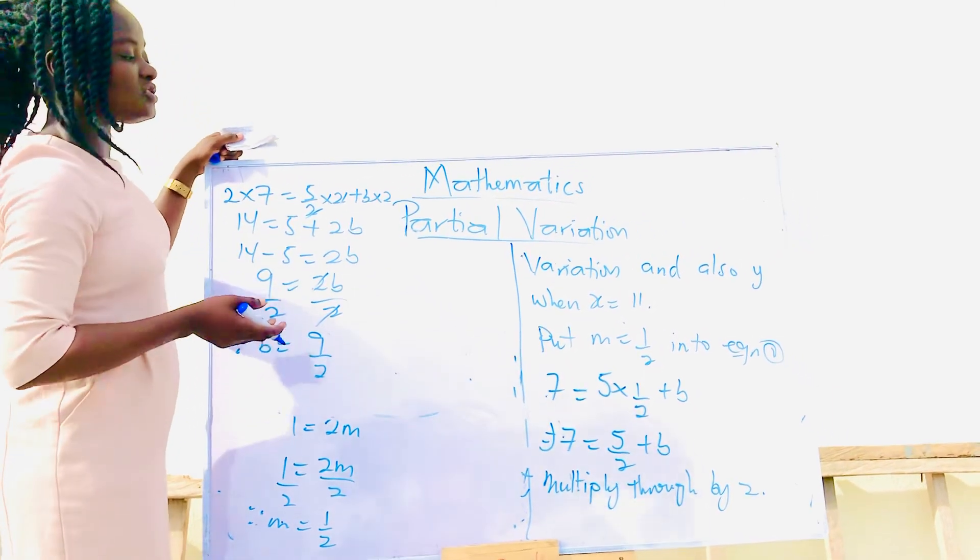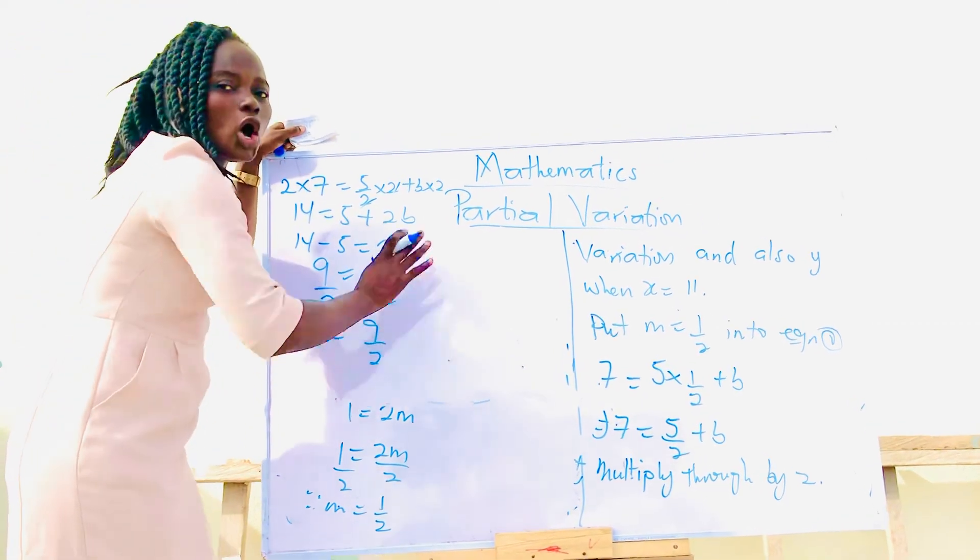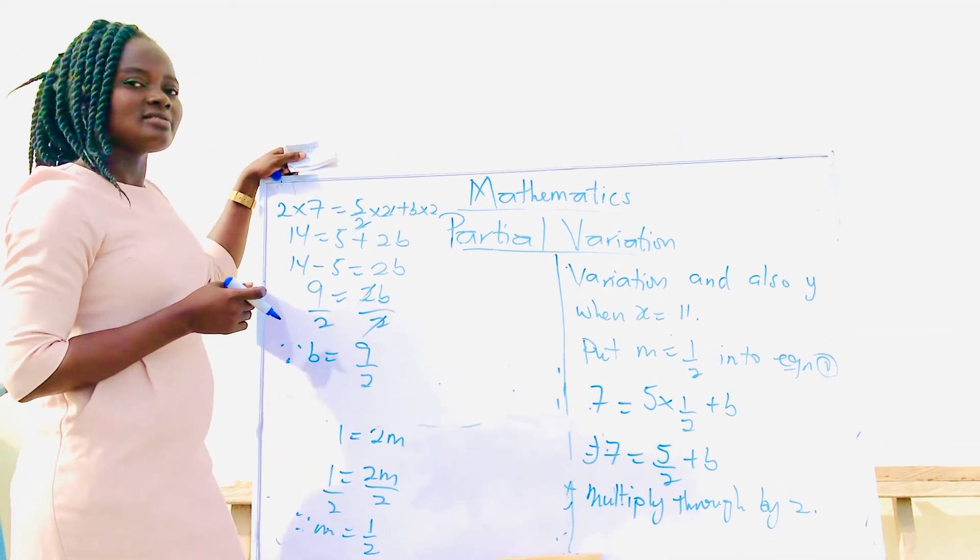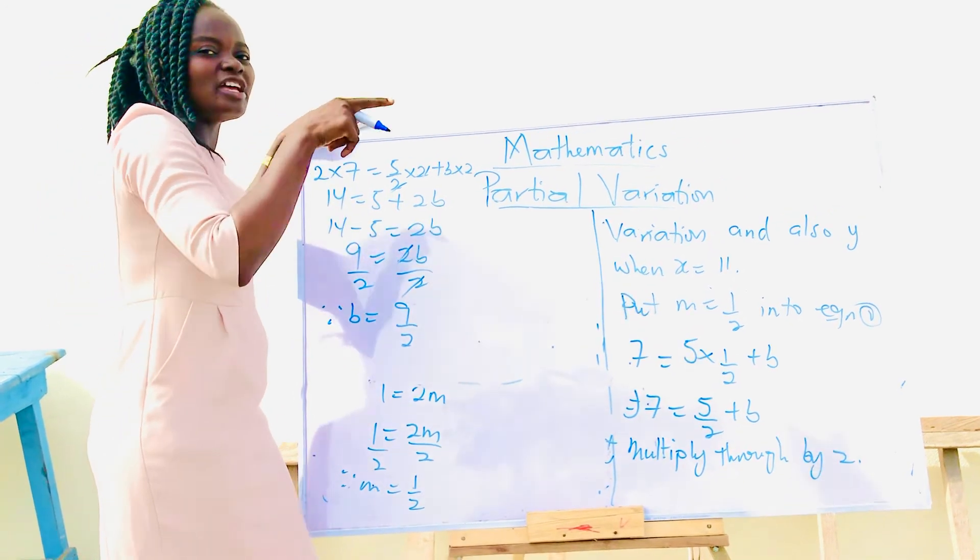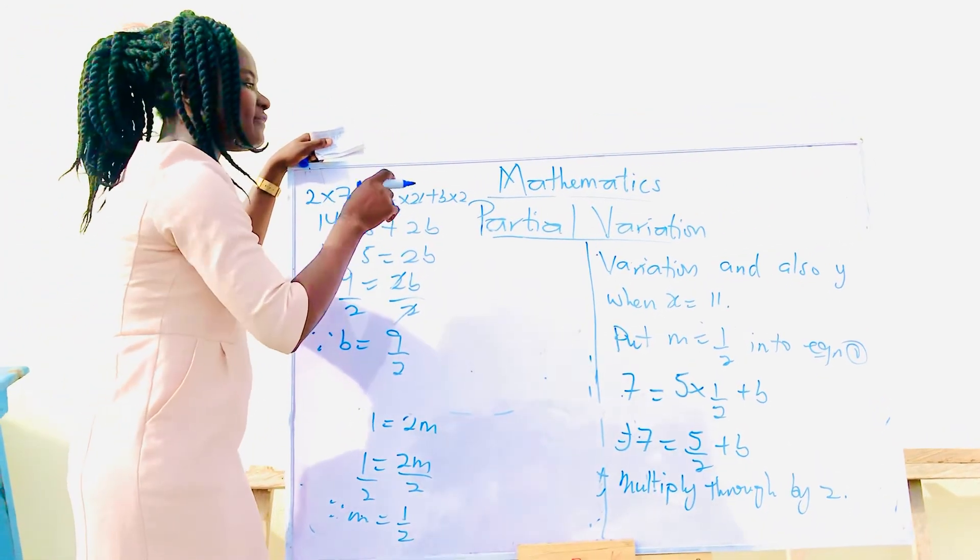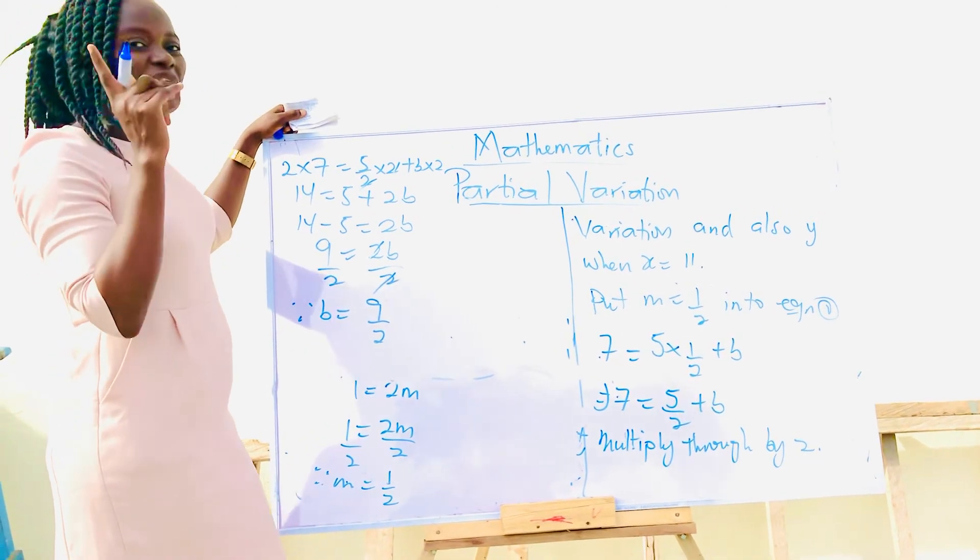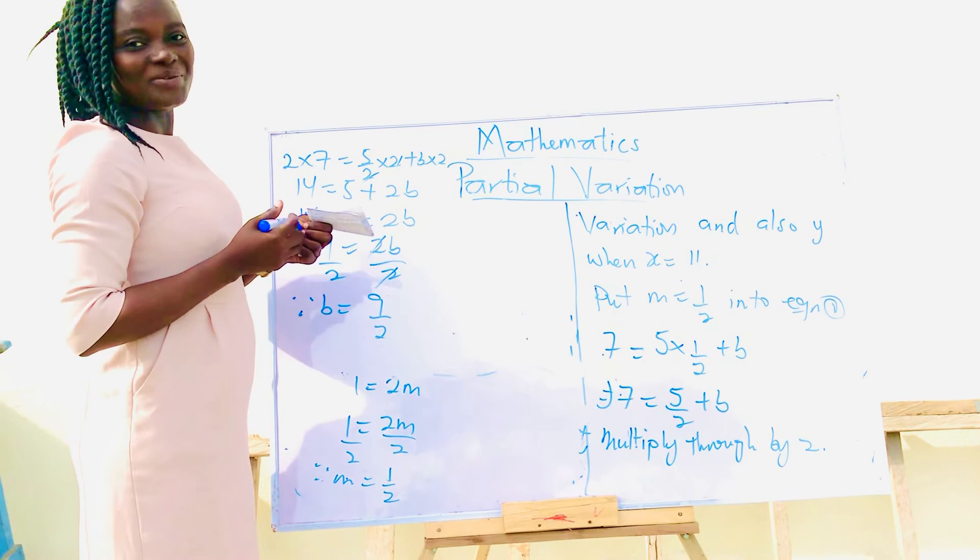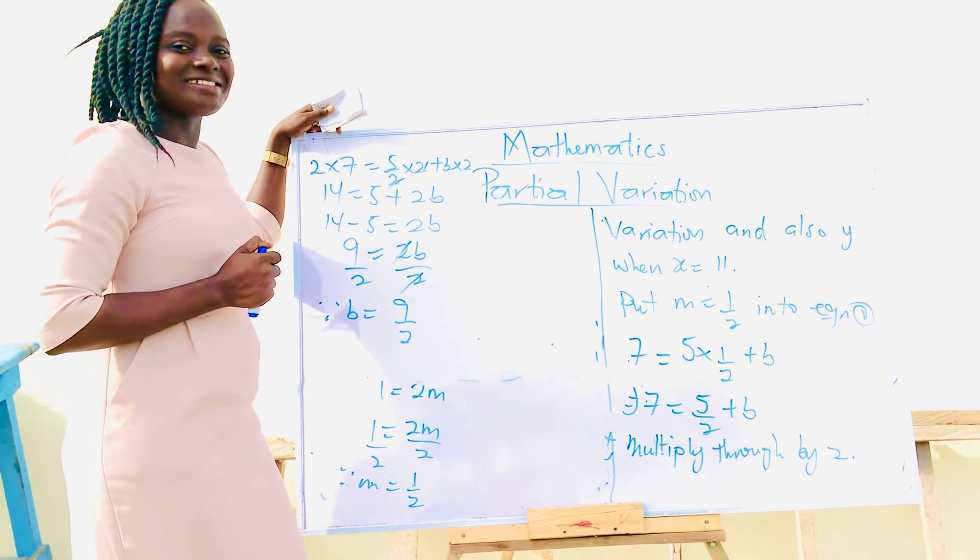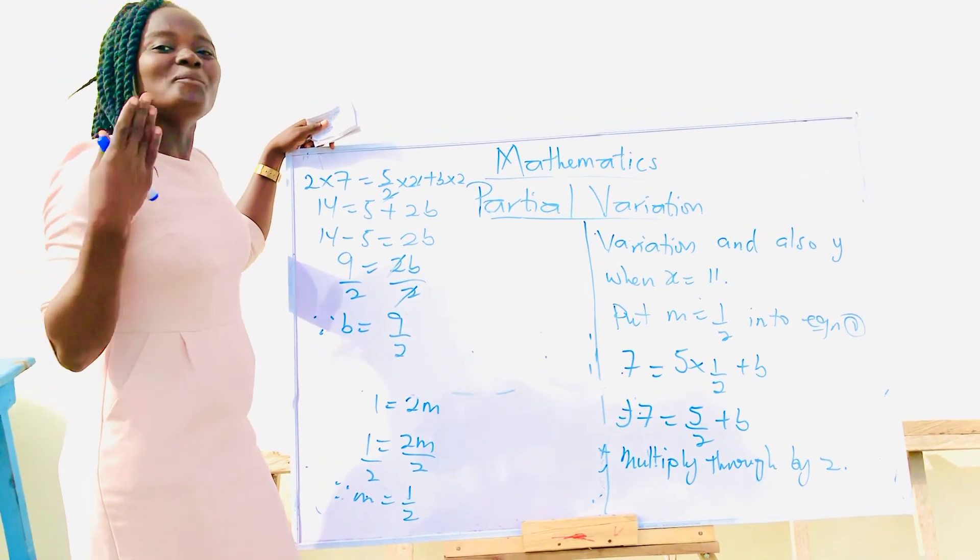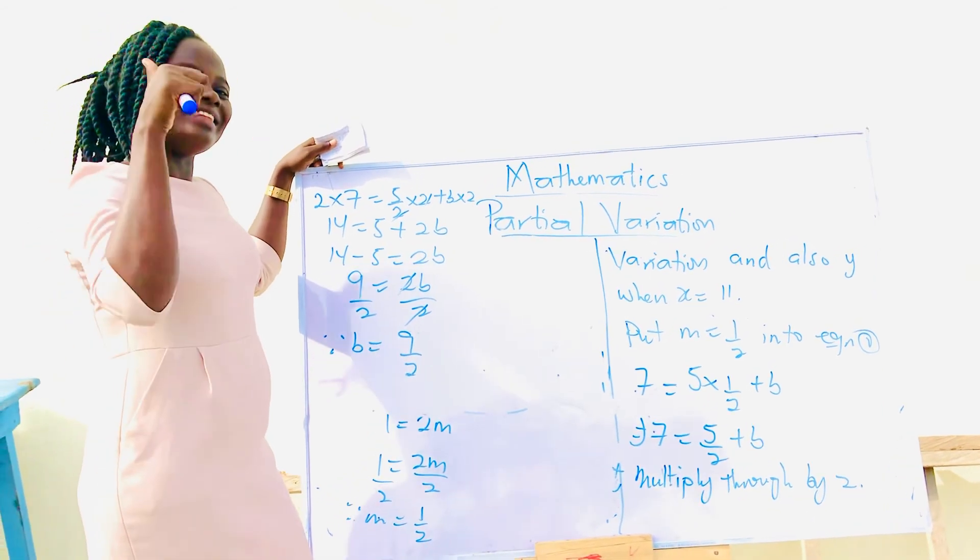We've been able to solve the first part of the question. First, change the whole statement into a mathematical statement. Then do your simple substitution into the general equation. For partial variation, this question gave us a simultaneous equation. I'll leave you to solve the second part of this question. Your answers are always welcome at the comment section. Please do not forget to solve more examples on your own to become perfect. We meet again. Please stay safe and learn hard.